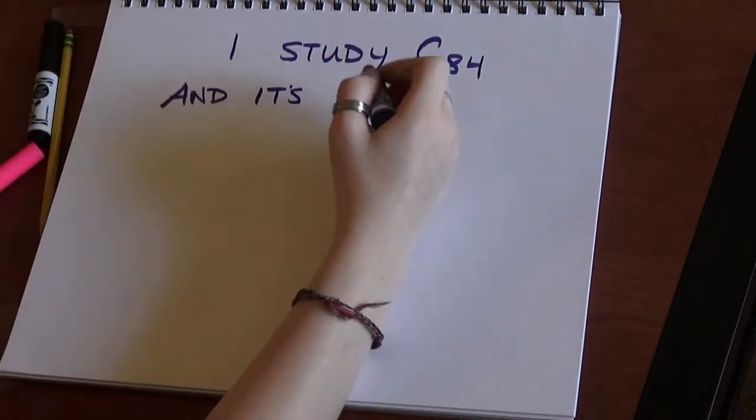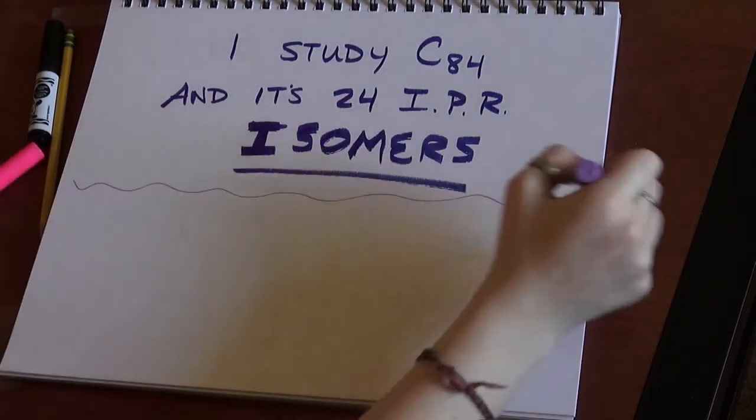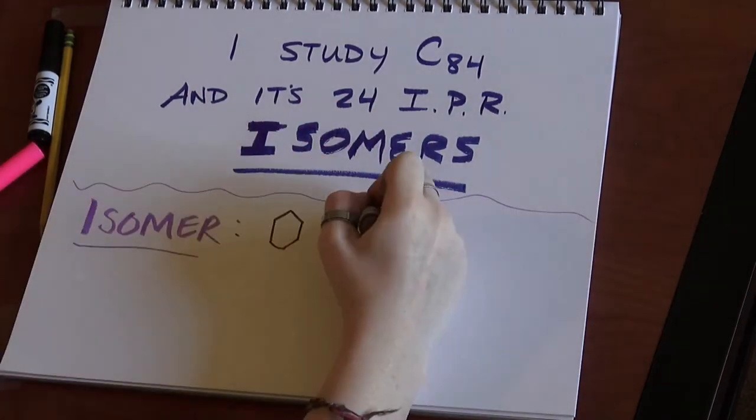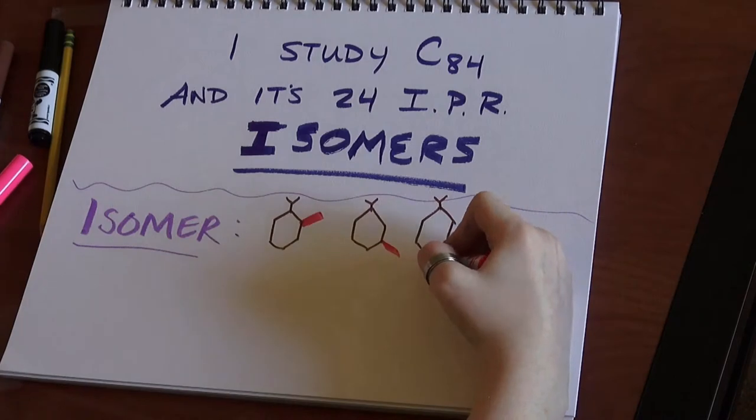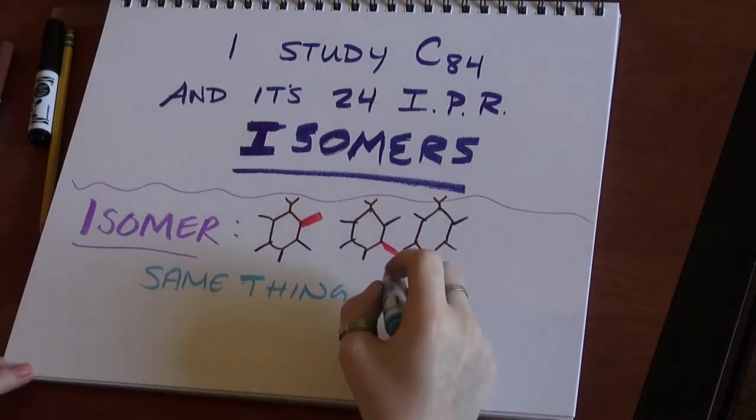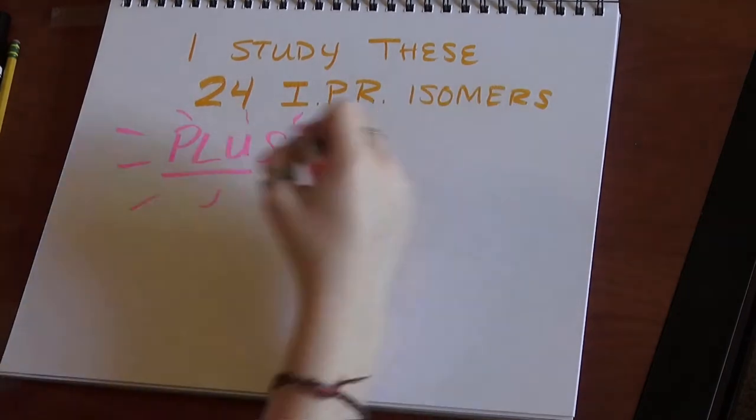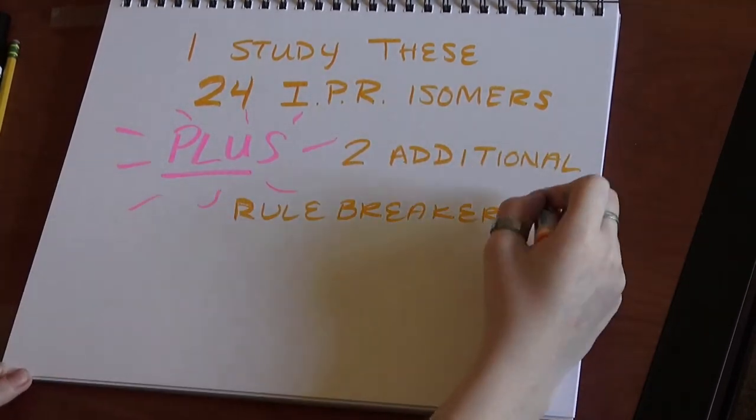I study C-84 and its 24 IPR isomers. What's an isomer? Isomers are molecules with the same molecular formula, but different chemical structures. I study 24 IPR isomers, plus two additional rule breakers, at various charges and temperatures.